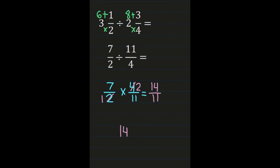14 elevenths is an improper fraction. If you can leave it that way, 14 elevenths is your answer. If you need to change it into a mixed number, remember that's numerator divided by denominator. So 14 divided by 11 is 1. 1 times 11 is 11; 14 minus 11 is 3. The quotient becomes your whole number, the remainder becomes your numerator, and the denominator of 11 remains the same. So 1 and 3 elevenths is your final answer.